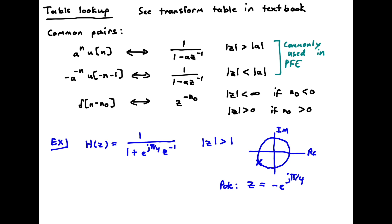So the book contains a transform table for the Z transform. The three most common pairs that we'll use in DSP are these three pairs. And so it's probably good to just go ahead and memorize these pairs. The first is a to the n u of n, which yields the transform 1 over 1 minus az inverse, where absolute value of z is greater than the absolute value of a.